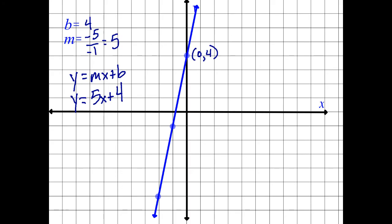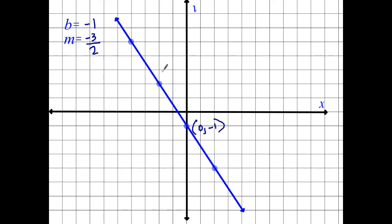Last one. Go ahead and try that one. Hopefully you got y equals mx plus b. So then you're going to get y is equal to negative 3 halves times x and then b minus 1.